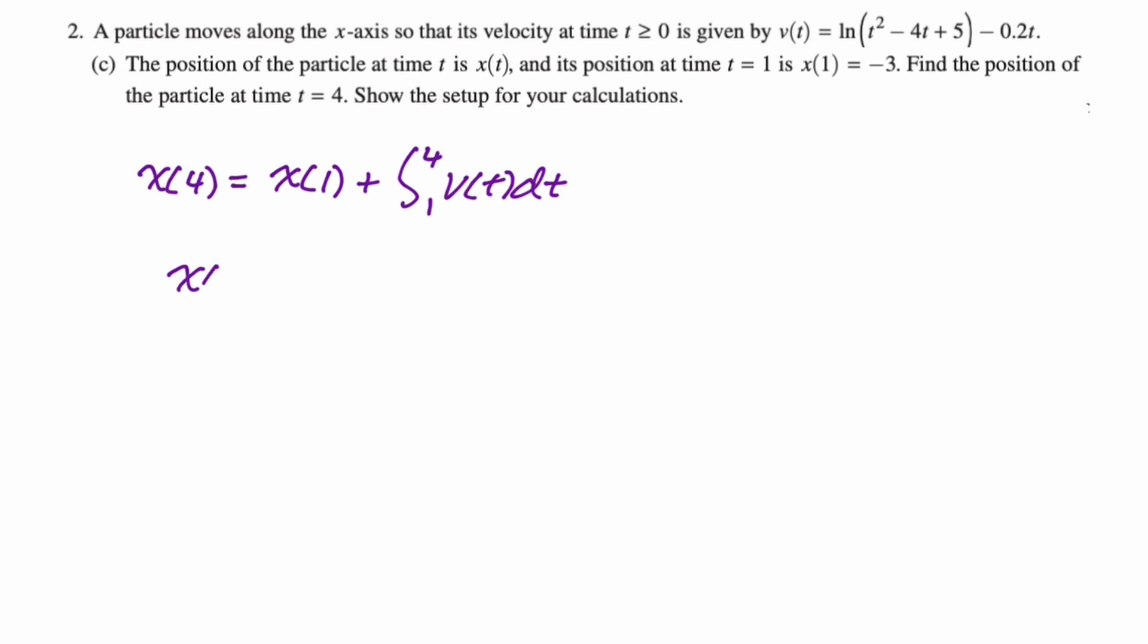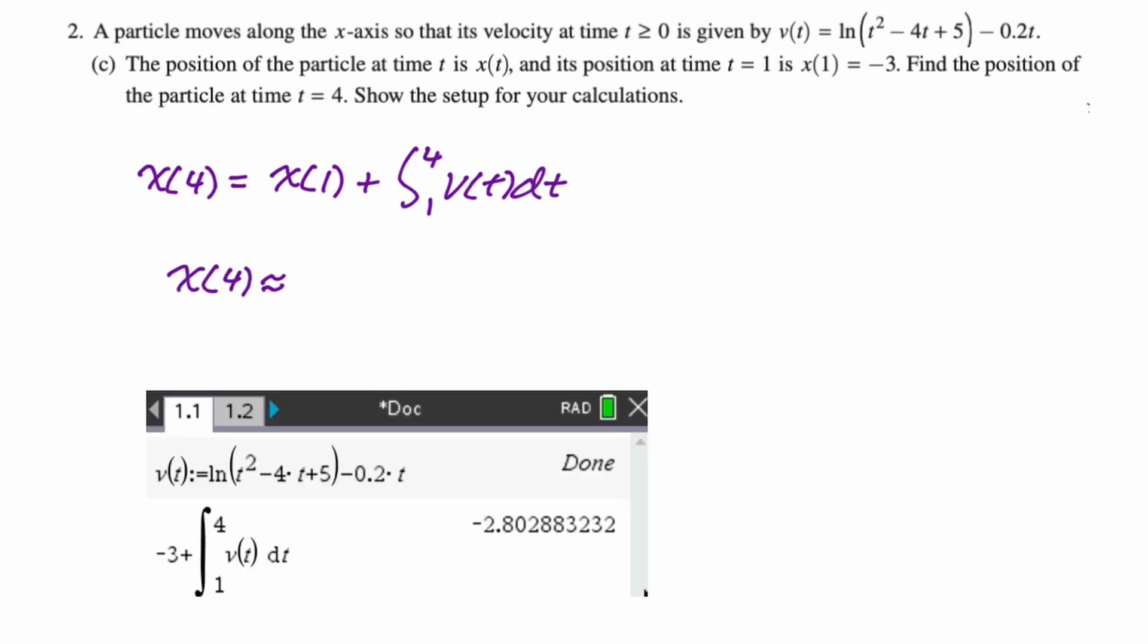So that's all we need. So then we could say that x of 4 is approximately equal to, we're going to go to the calculator. You can see what I did here. I just took the value negative 3, and I added on the integral from 1 to 4. And I got approximately negative 2.803. And that's all there is to do in part C.